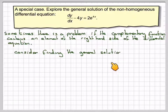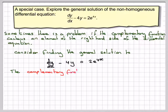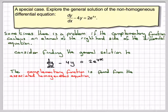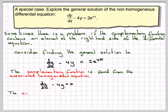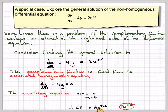Consider finding the general solution to dy/dx minus 4y equals 2e to the 4x. Using the method from the previous video, the complementary function is found from the associated homogeneous equation: dy/dx minus 4y equals 0. The auxiliary equation becomes m minus 4 equals 0, so m equals 4. Therefore, the complementary function will be of the format Ae to the 4x — so it was of this sort of format.